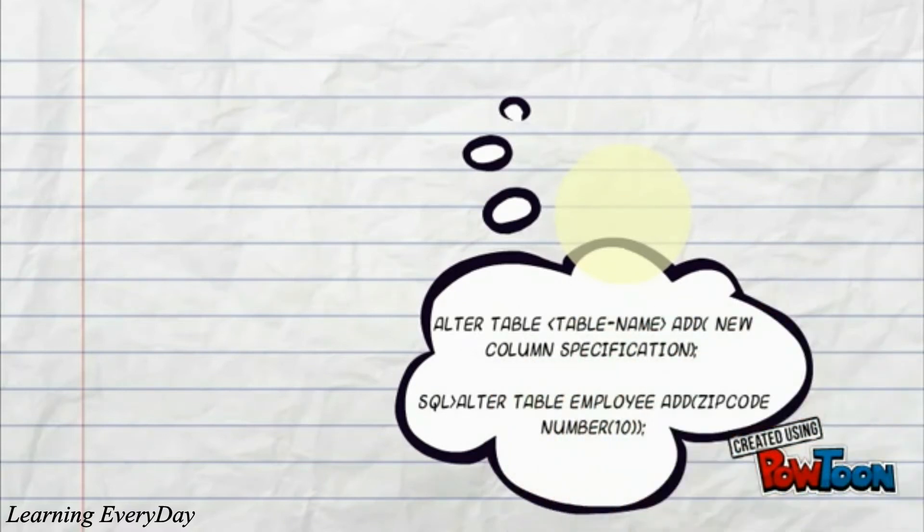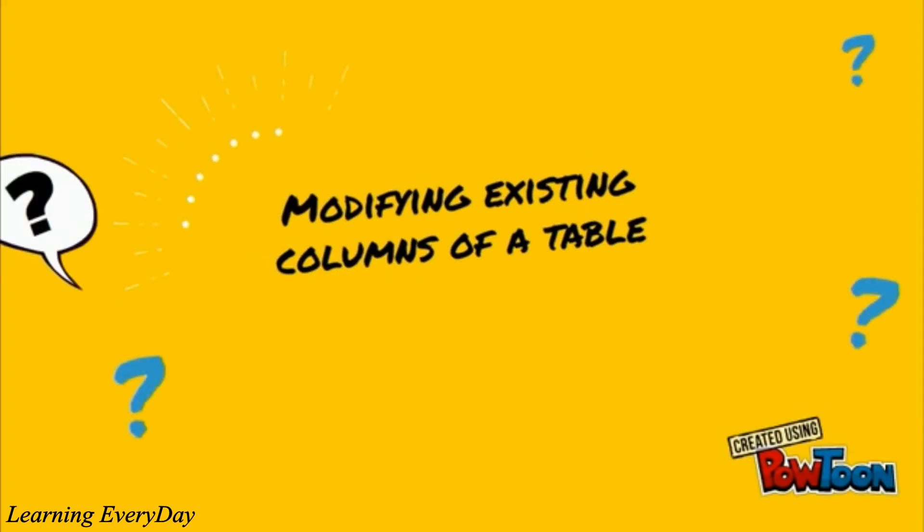By this way a new column zip code will be added to employee table. Let us have idea of modifying existing columns. Sometimes at the time of creating table, we reserve space for a column. And while entering records in that table, the space reserved for that column is not sufficient. In that case you can modify the width of that column using modify option of alter table command.